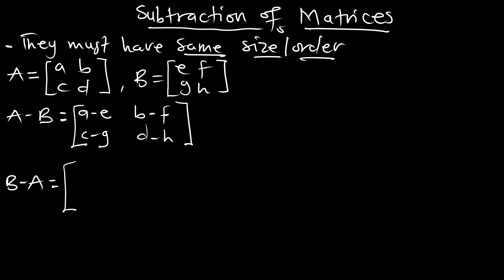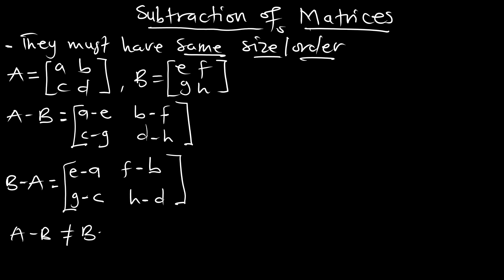For B minus A, pay attention — B is starting, so our entities should start from B. The first position of B is E, so we have E minus A. Then F minus B, G minus C, and H minus D. So you can see that A minus B is not equal to B minus A.